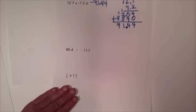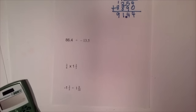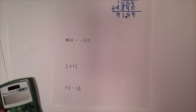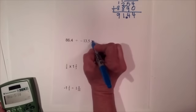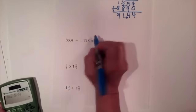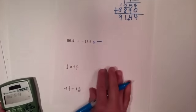Now let's look at dividing eighty-six point four by thirteen point five. Let's do the sign first: when we divide, I need two negatives and I only have one, so the answer is negative. Now let's set up the bracket with thirteen point five on the outside and eighty-six point four on the inside.